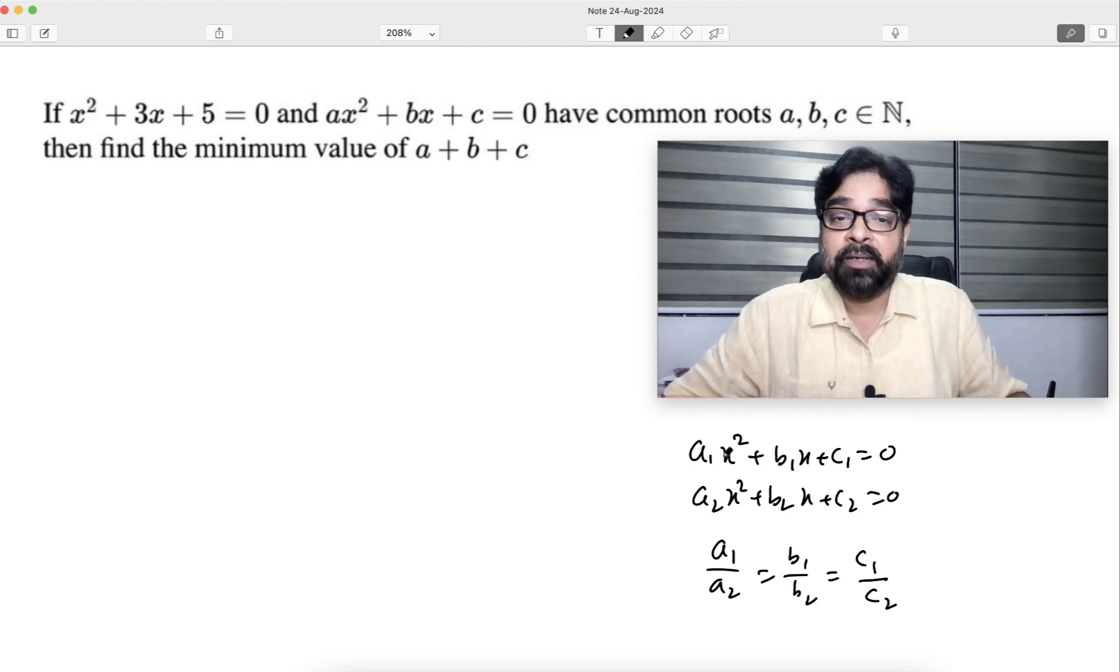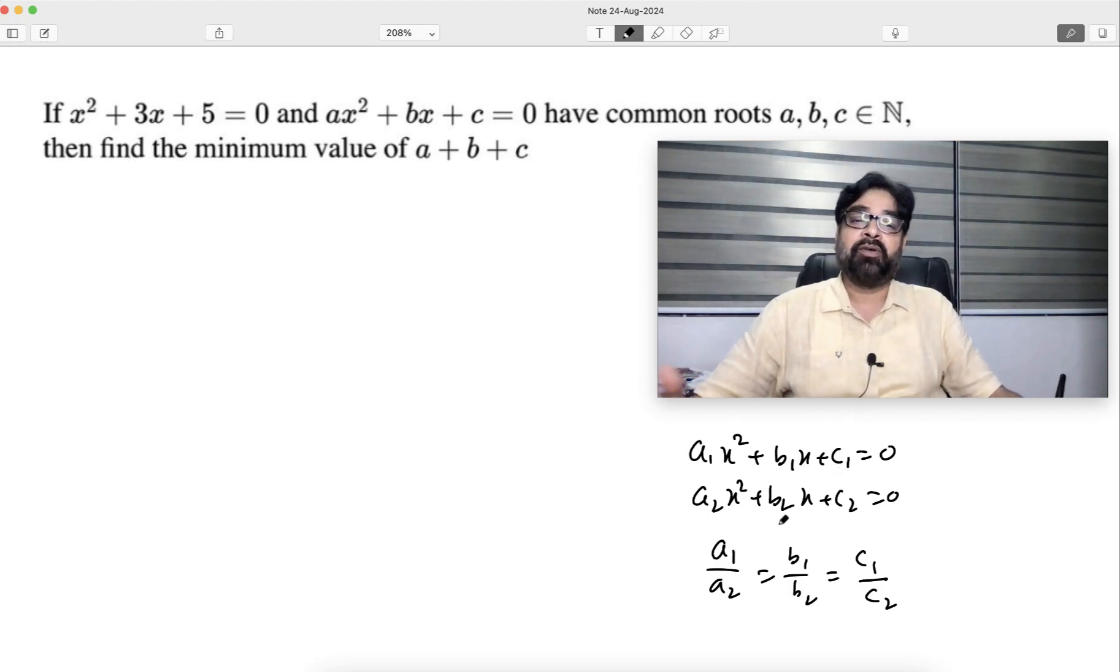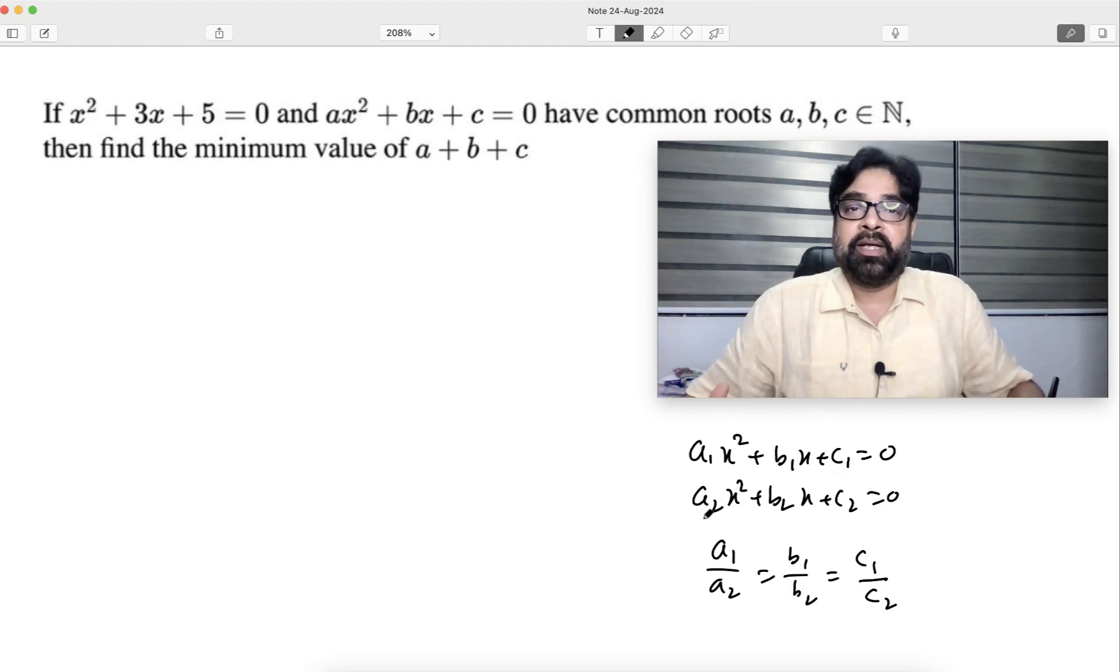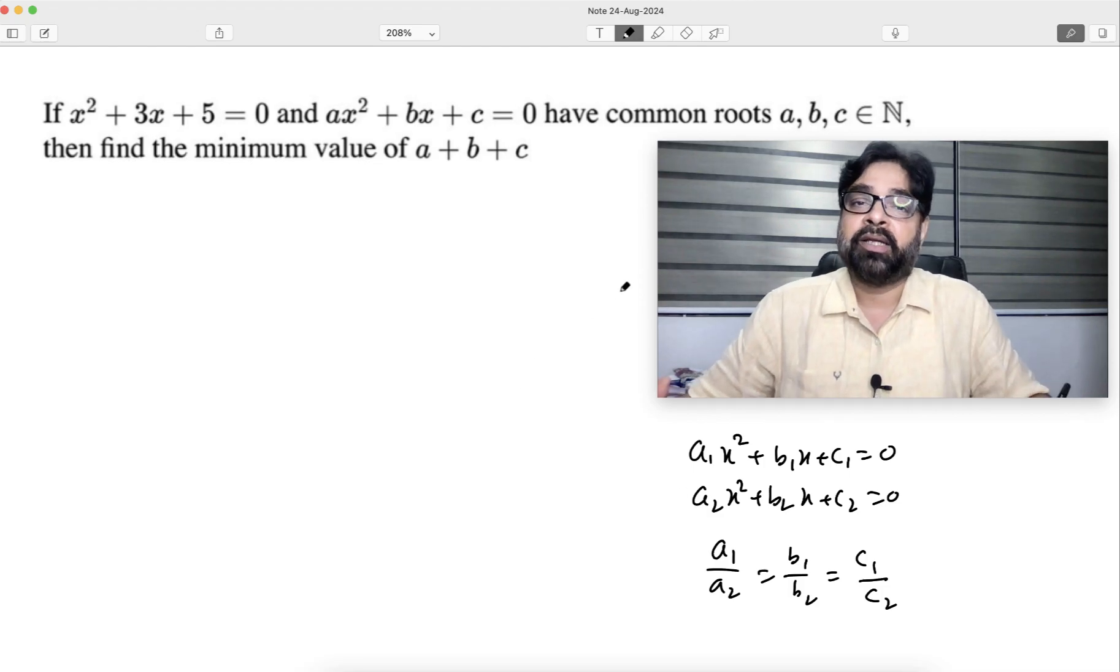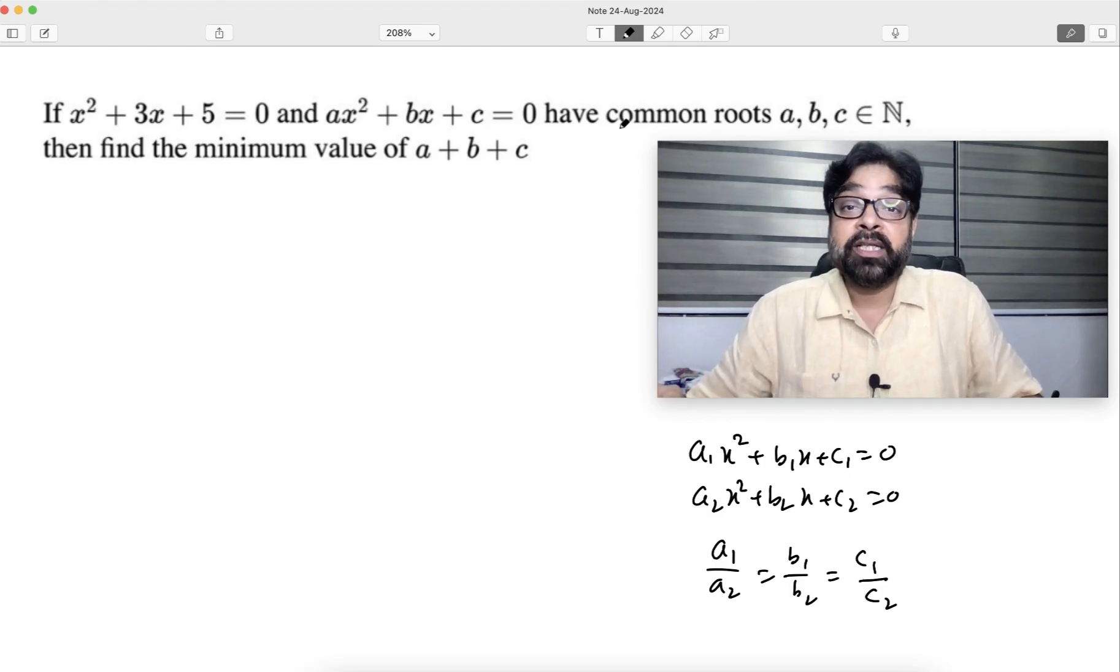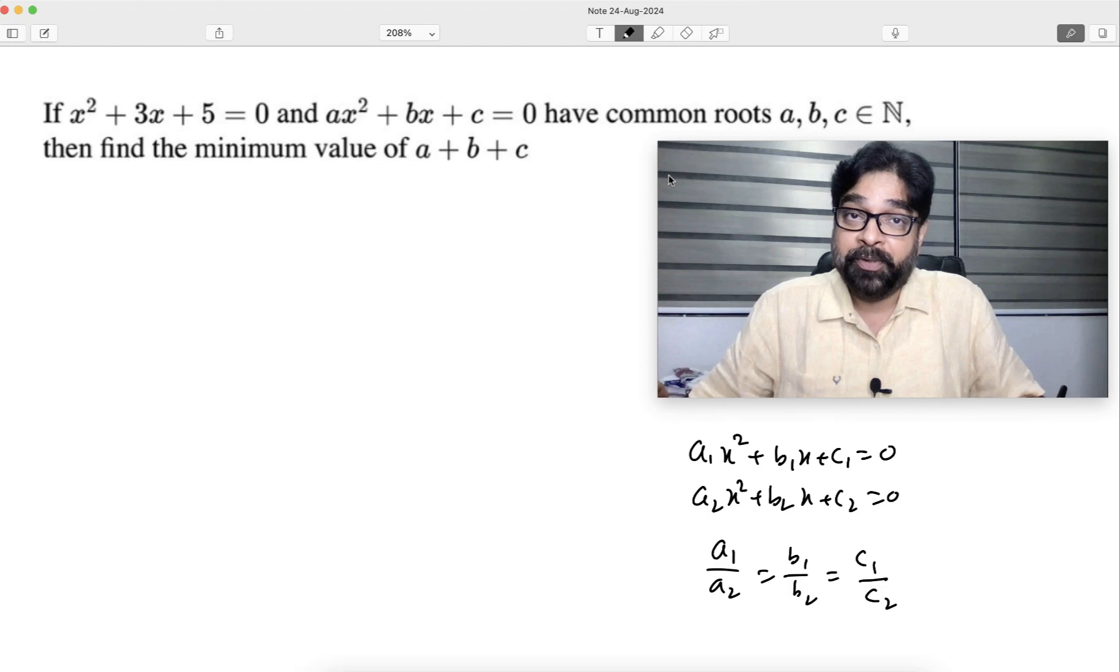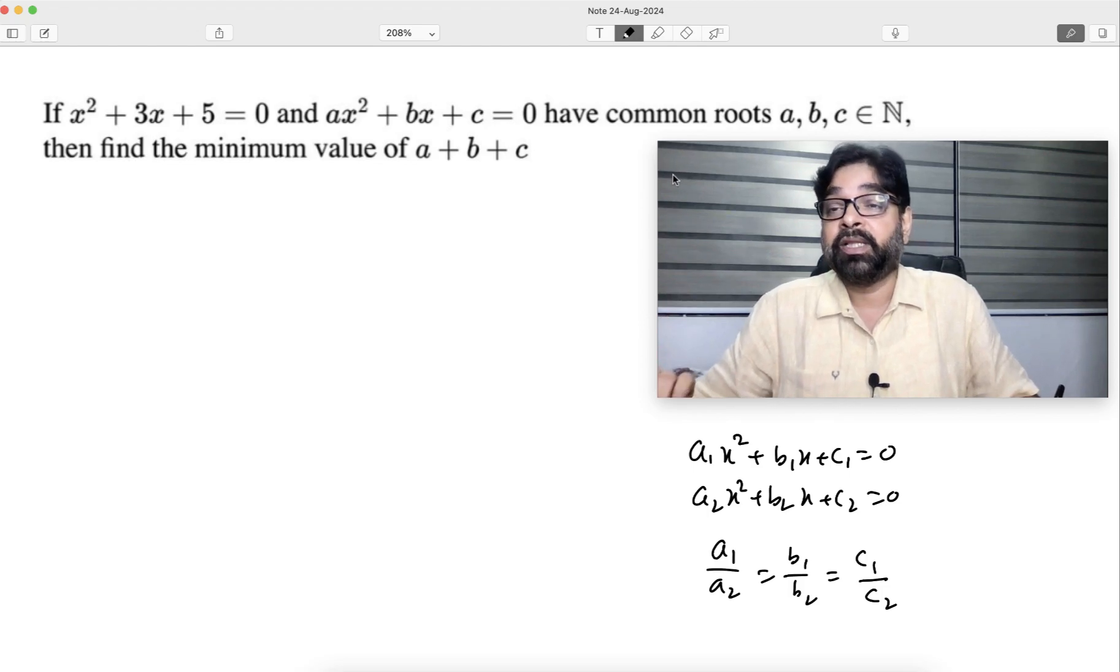If one root is common, then suppose alpha is common—put it and then try to delete alpha, get the alpha squared and substitute. That is when if any question I am giving on that, I will discuss. Now, here it is not mentioned that both roots are common. You have to use common sense.